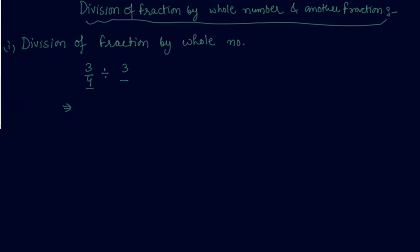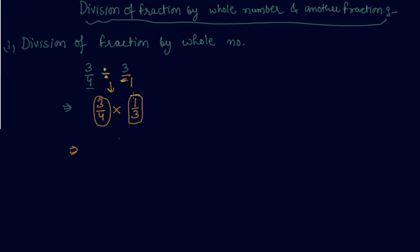We have to divide 3 by 4 divided by 3. Whenever I change the sign of division, I can write this 3 as 3 by 1. So when I convert the sign of division into multiplication, I will interchange the position of numerator and denominator. Now this becomes a simple multiplication of fraction by another fraction.